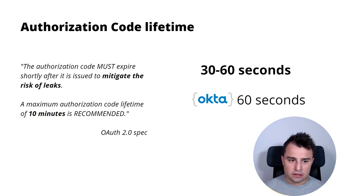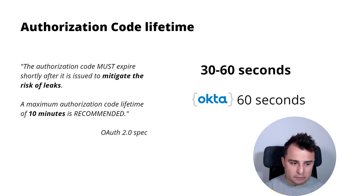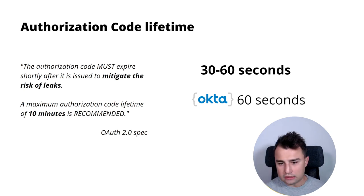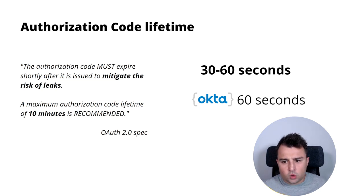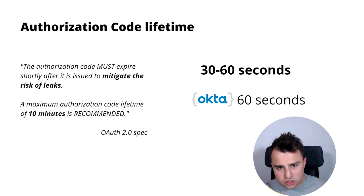Authorization code lifetime. This is also important to know — it is very short-lived. The OAuth spec recommends a maximum lifetime of 10 minutes for authorization codes. For example, Okta gives it only 60 seconds. Usually, implementations use something between 30 and 60 seconds, because it should be executed quickly to exchange this code for the access token — it's just a semi-step that should automatically take the code and exchange it for the token.